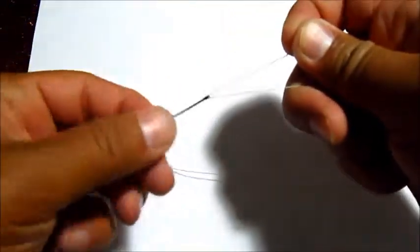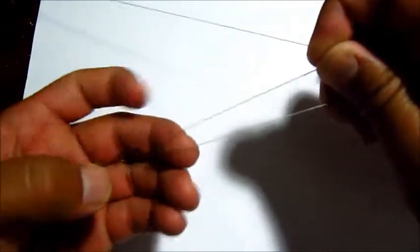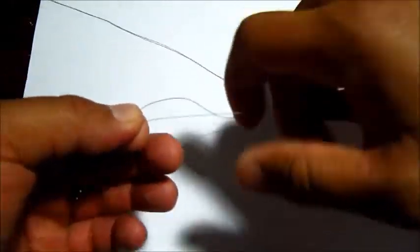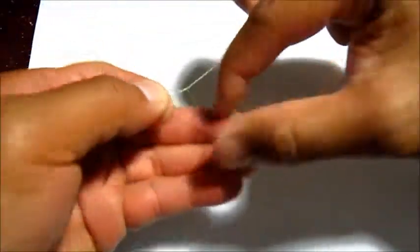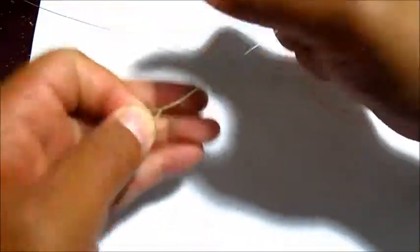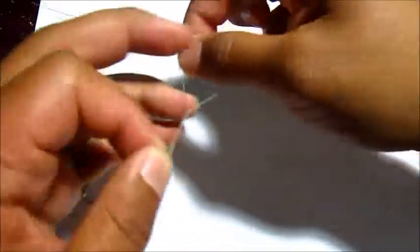This one is called the Improved Fisherman's Knot. You're going to do five rotations. Wrap it around five times: one, two, three, four, five.